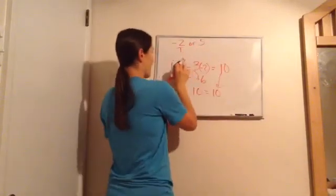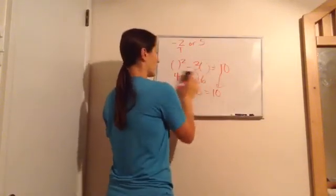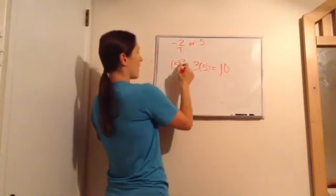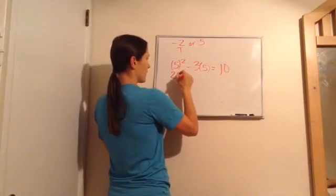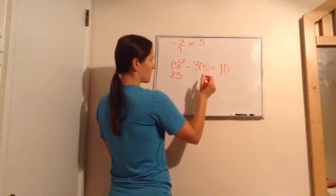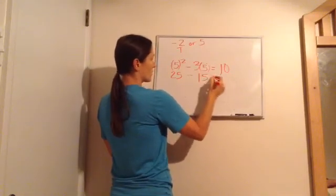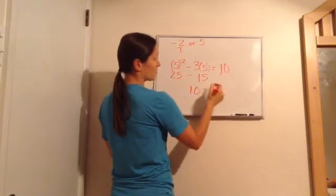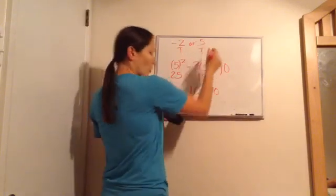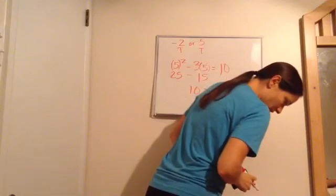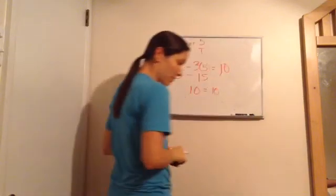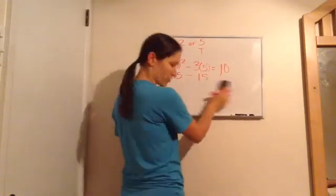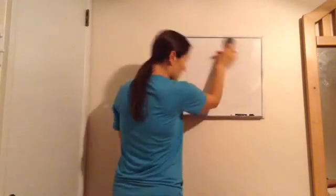Now let's try five. Five squared is twenty-five. Three times five is fifteen. Twenty-five minus fifteen is ten. And ten equals ten. True. They both satisfy the answer on that one. So you would just say both negative two and five satisfy this equation. That's how you would answer that. And that is lesson twenty-two.